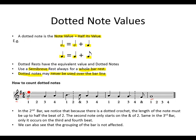Then we look at the time signature, which is very important to help us count the dotted notes. We are in 4-4 time. In the second bar, we notice that because there is a dotted crotchet, the length of the note must be up to half the beat of 2. Remember that half a beat will equal to that dot over there. The second note only starts on the end of 2.